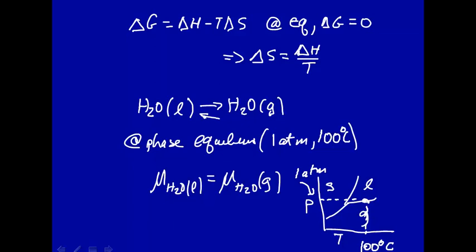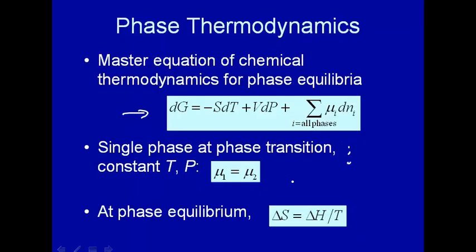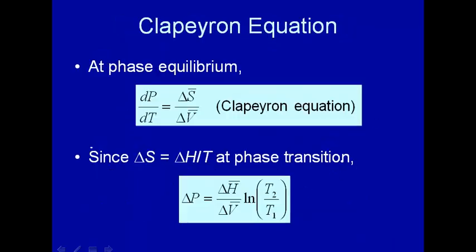Along the phase boundary — in fact, any place along the phase boundary, this one or that one — we have to have the chemical potential of one phase equal to the chemical potential of the other phase. That's what we mean by phase equilibrium.